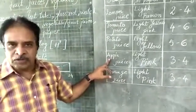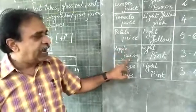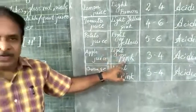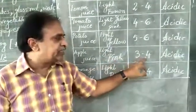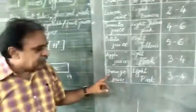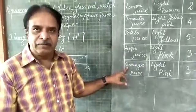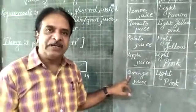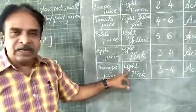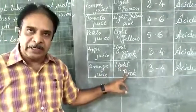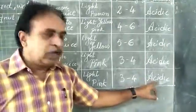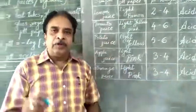The fourth sample is apple juice — a very common fruit we use every day. The change in the pH paper color is light to pink, and the approximate pH is around 3 to 4, also acidic in nature. The last sample is orange juice, full of vitamin C and known as a winter fruit. The color change on the pH paper is light pink, with an approximate pH of 3 to 4 — also acidic in nature.